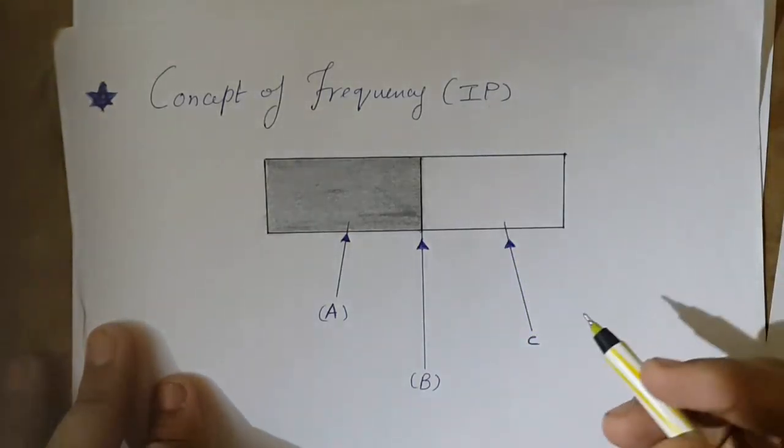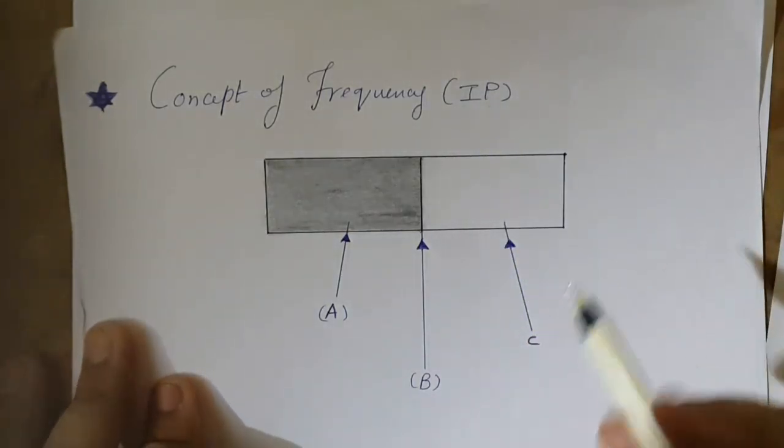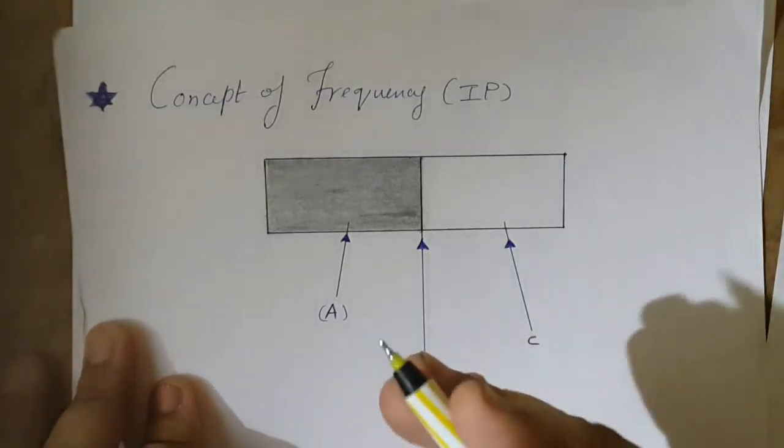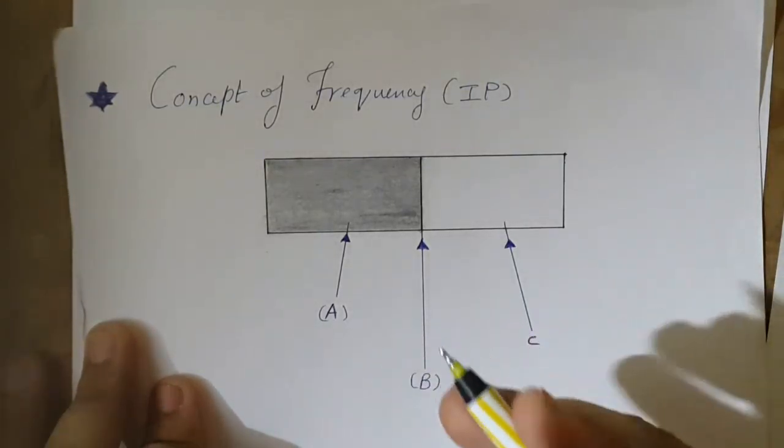So basically in image processing, how often the intensity changes is the frequency.